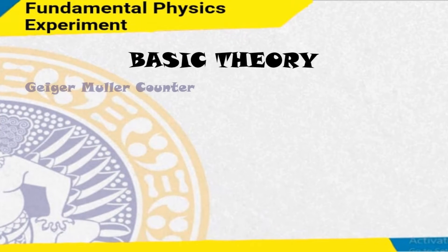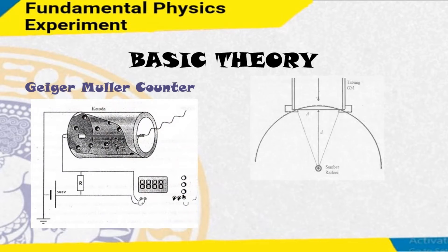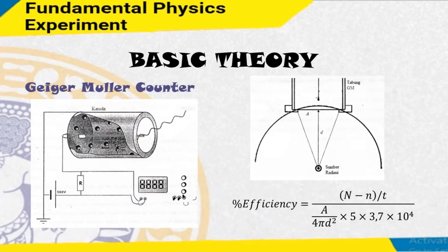The Geiger counter is a device used to detect and measure ionizing radiation, also known as Geiger-Muller counters. These tools are widely used in applications such as radiation dosimetry, radiological protection, experimental physics, and the nuclear industry.